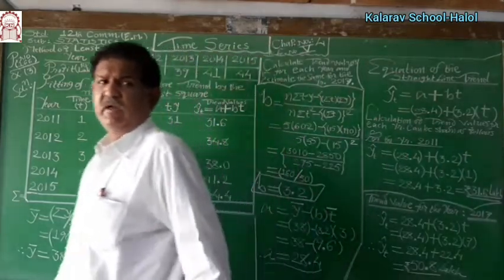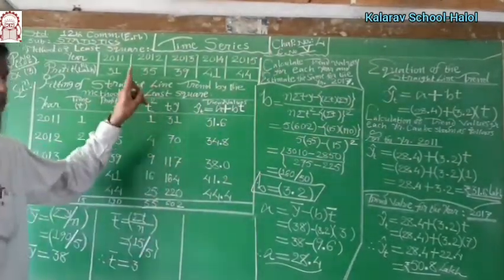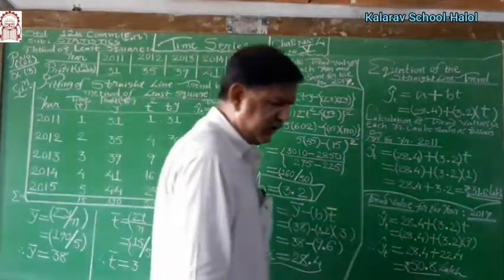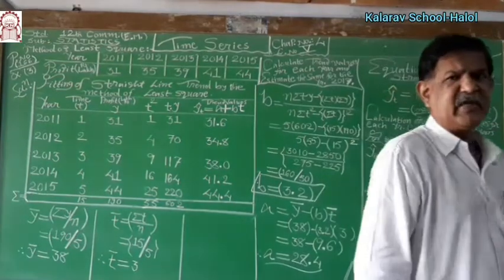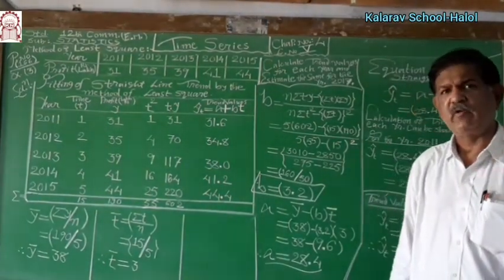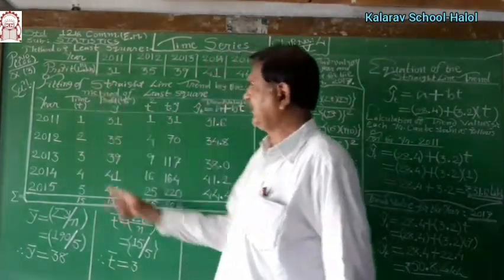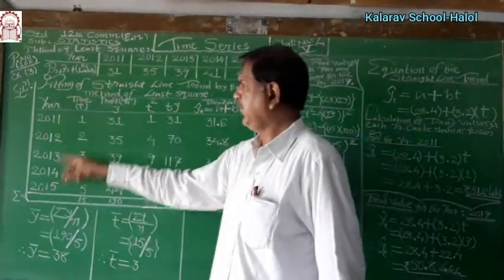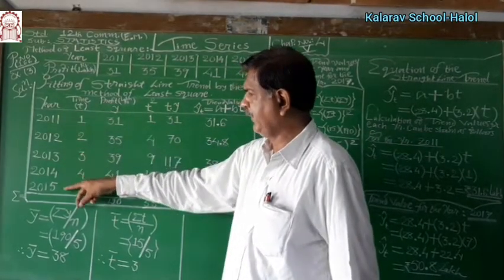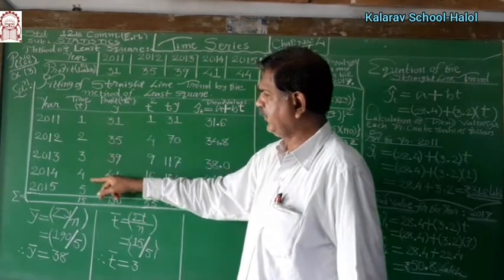We have to prepare a table. See chapter number 4, time series — this is the most important method, and one example of this type can be asked for 4 or 5 marks. You must prepare this table for this method. Year and time T: year 2011, 2012, 2013, 2014, 2015, and time T as first, second, third, fourth, and fifth year.